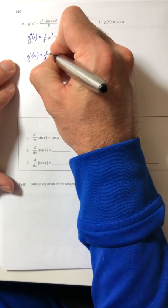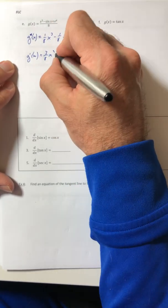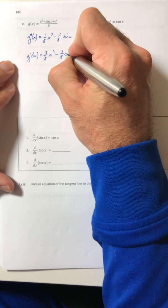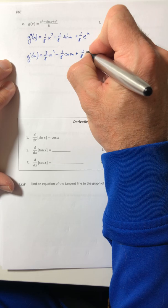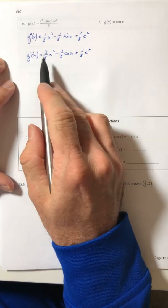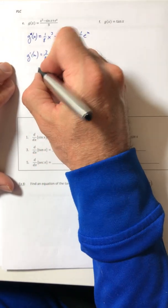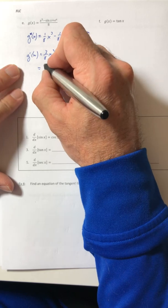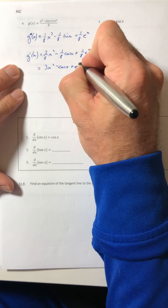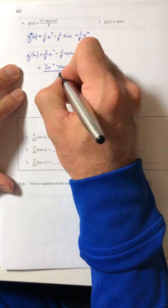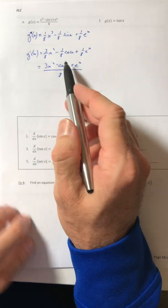So three eighths x squared minus one eighth cosine of x plus one eighth e to the x. And they have the same denominator again. So you can put it all back into one fraction if you wanted to. And there you go. You can call it a day.